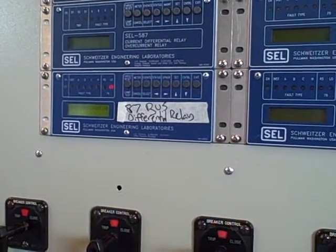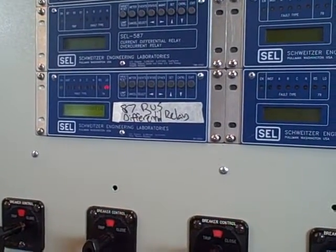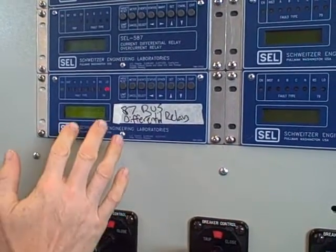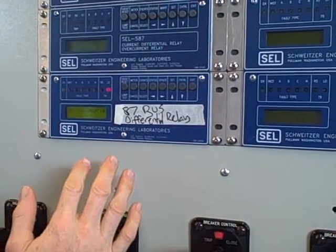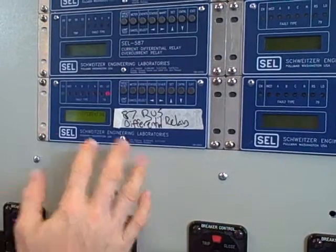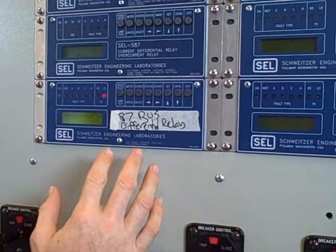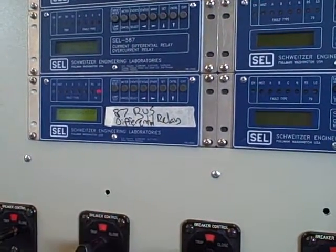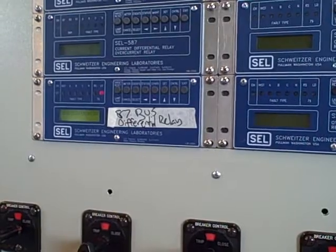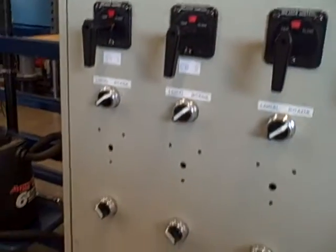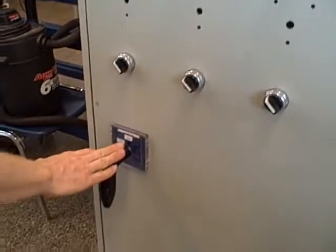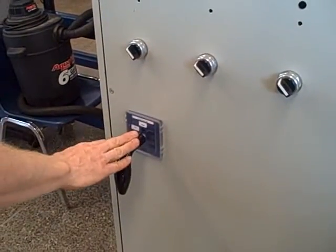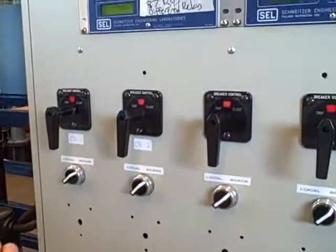What I'd like to demonstrate here is one of the features that you have with a digital relay: you can force the trip output contact to actually close. I'm going to do that to show how the lockout relay function on the substation works and how when that trips, it trips off all five circuit breakers.